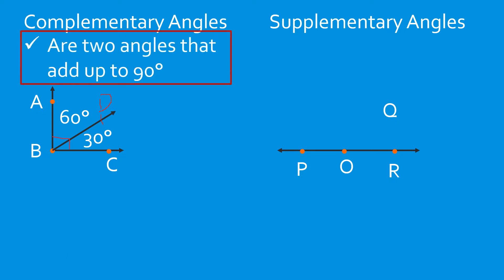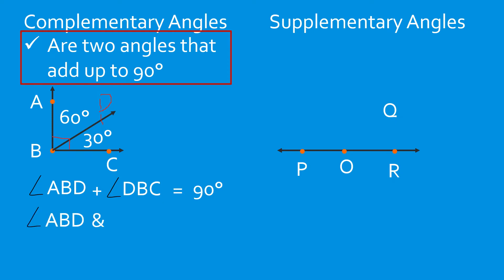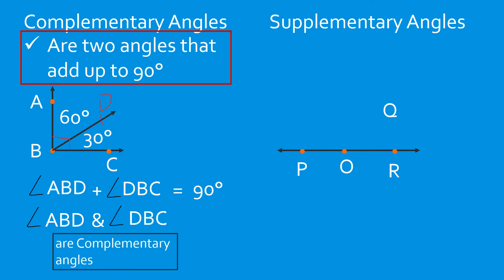So what do we mean by complementary angles? Complementary angles are two angles that add up to 90 degrees. So I can say that the measure of angle ABD plus the measure of angle DBC is equal to 90 degrees. Or: angle ABD and angle DBC are complementary angles.